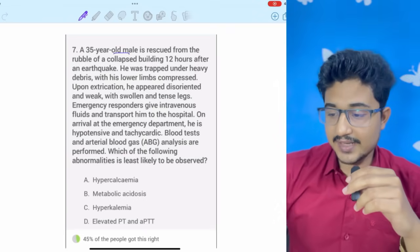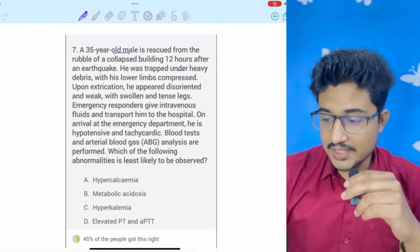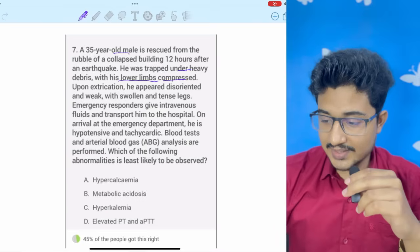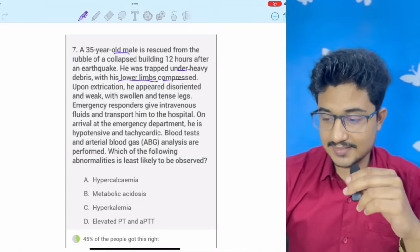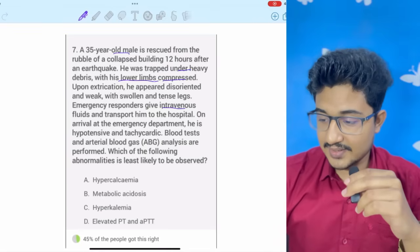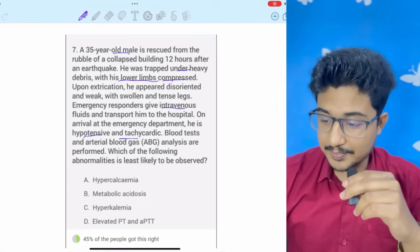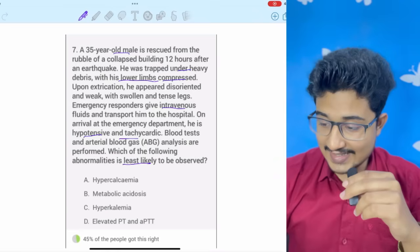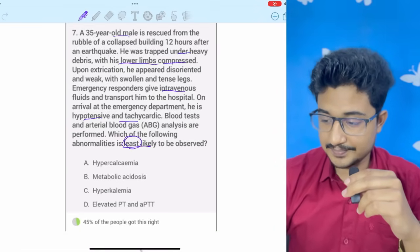A 35-year-old man is rescued from rubble of a collapsing building 12 hours after an earthquake. He was trapped under heavy debris. His lower limb compressed. Upon the rescue, he appeared disoriented, weak, swollen legs and tense legs. Emergency responders gave IV fluids, transported him to the hospital. On arrival, he was hypertensive, tachycardic. An ABG was performed. What is the least likely? So, here the keyword is the least. Don't miss the least word. To be observed.